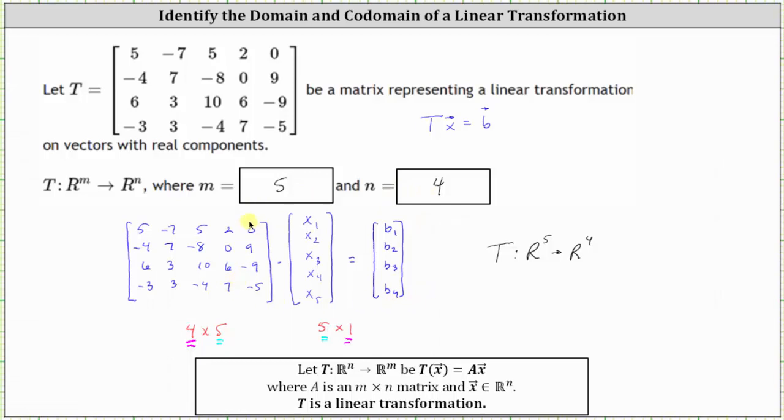We can also notice that the elements in matrix T would be the coefficients of the equations that result in the components of vector B, where we have four equations with five unknowns. I hope you found this helpful.